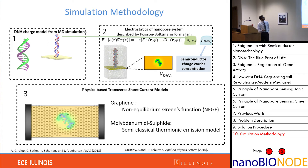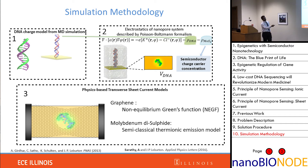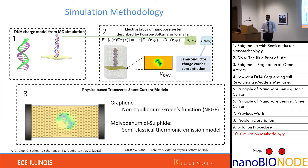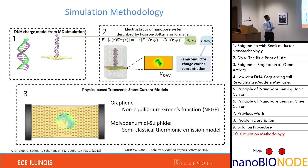My simulation methodology: I first start with molecular dynamics simulations, which describe the path the DNA takes as it goes through the material under an applied bias. At every time instant, I calculate the electrostatic potential induced on this membrane, taking into account the charge and positions of the DNA and surrounding ions. I then plug these potentials into physics-based models for graphene and MoS2, and the output tells me the value of the current at each specific instant in time.